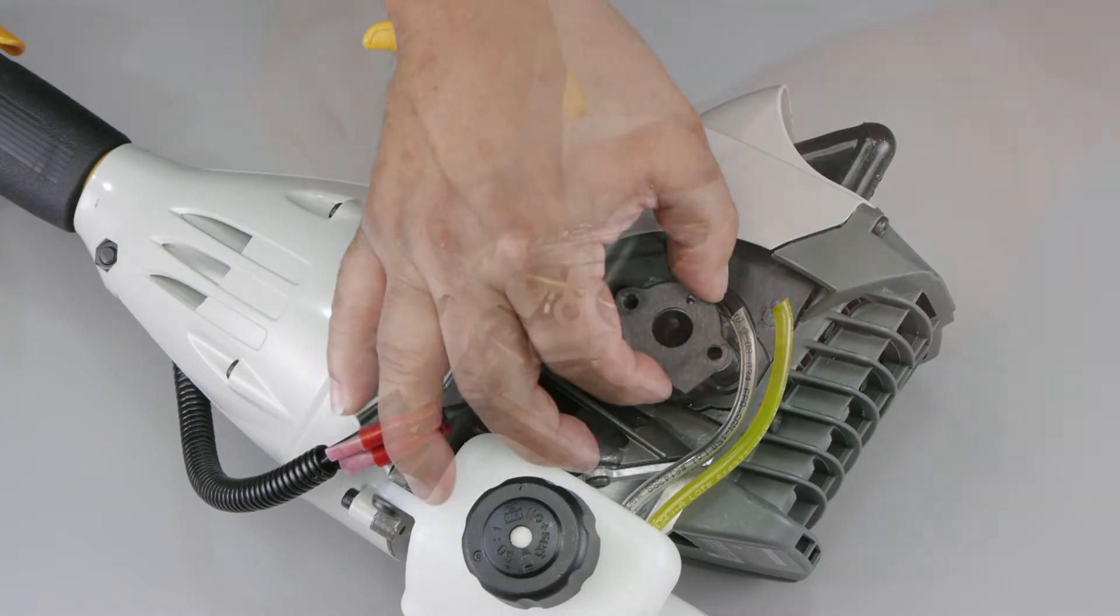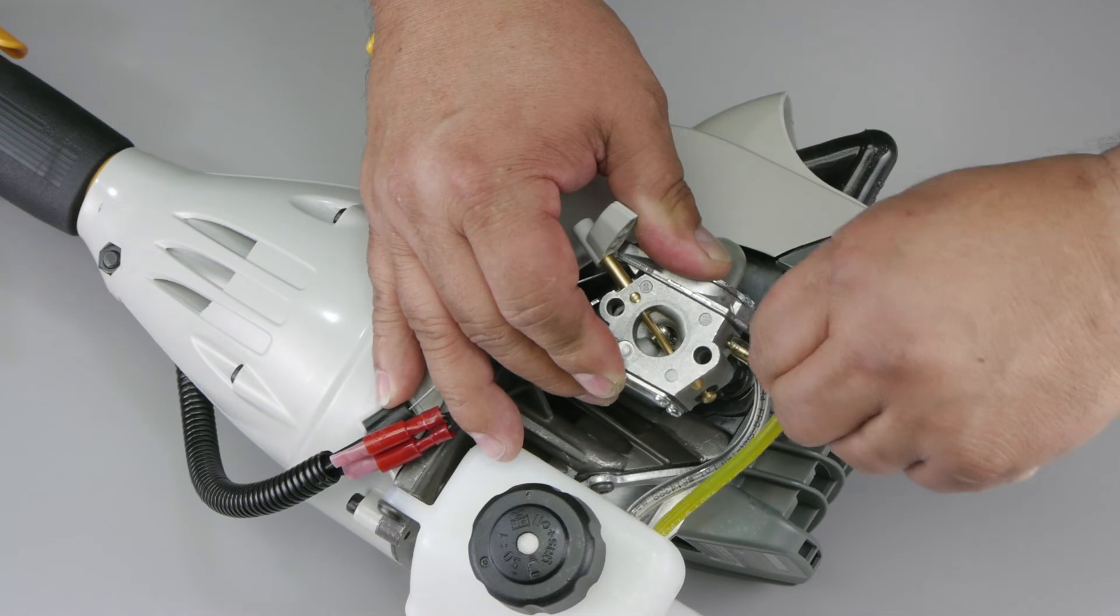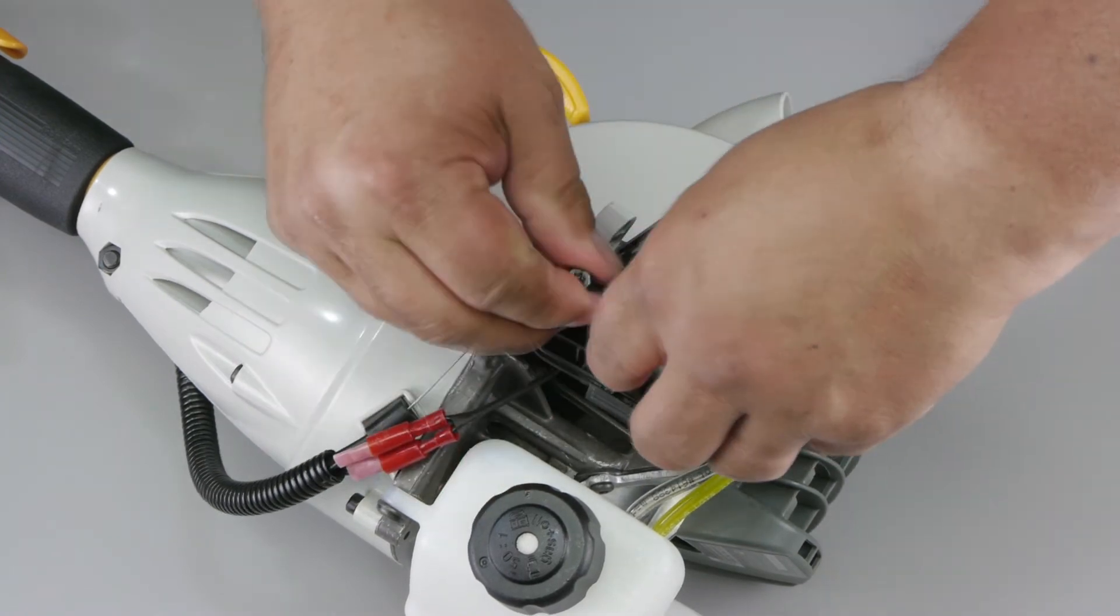If the carburetor passes the pressure test, it can now be reinstalled on the engine and checked for proper adjustment.